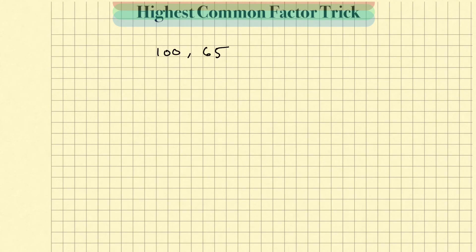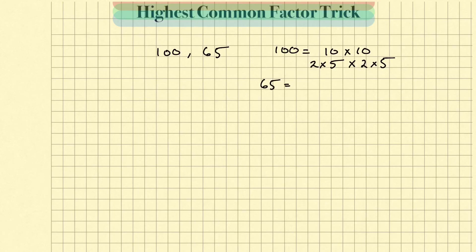Highest common factor of 100 and 65. So 100 equals 10 times 10, and 10 is 2 times 5 times 2 times 5 — those are the factors for 100. The number 65 equals 5 times 13, and 13 is a prime number that can't be broken down anymore. We just find numbers that match up between the two: we have a 5 here and a 5 here, and nothing else matches. So the greatest common factor equals 5.